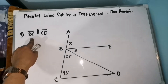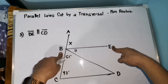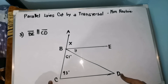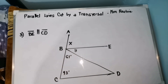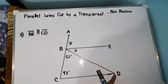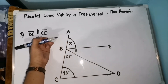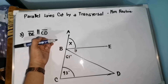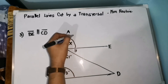For number 3, segment BE is parallel with segment CD. So, BE is parallel with CD. Our transversal line ay itong segment AC, and pwede rin naman itong segment BD. Let's find the value of X first. Since BE and CD ay parallel lines, tapos ang ating transversal ay AC, itong 73 degrees at itong X ay corresponding angles. And according to the properties, corresponding angles are congruent. So, if this is 73 degrees, therefore the value of X is 73 degrees.